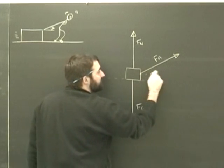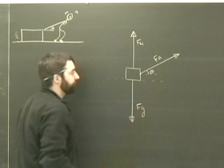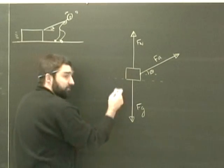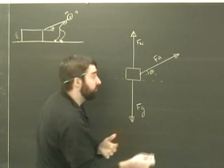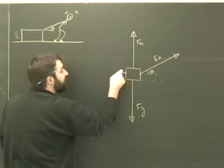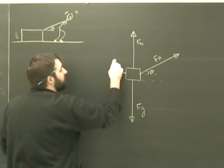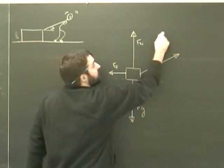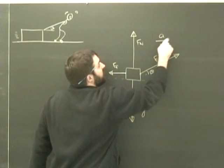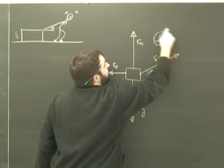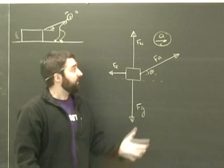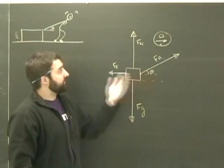This angle, I'm just going to go ahead and label it theta. Is there friction? I'm sure you hopefully understand there would certainly be friction, and it will be in this direction — against the direction of motion. If the box is accelerating, it's going to be accelerating in this direction. So that's fine, I've got my free body diagram.